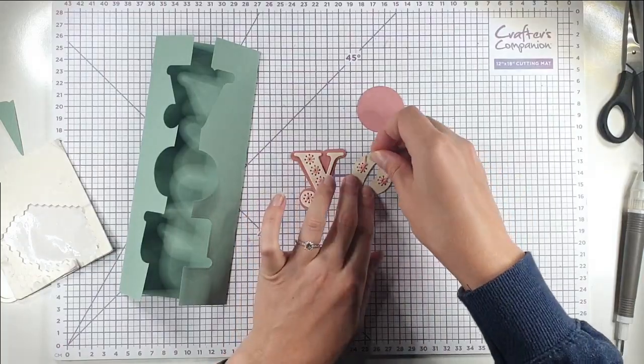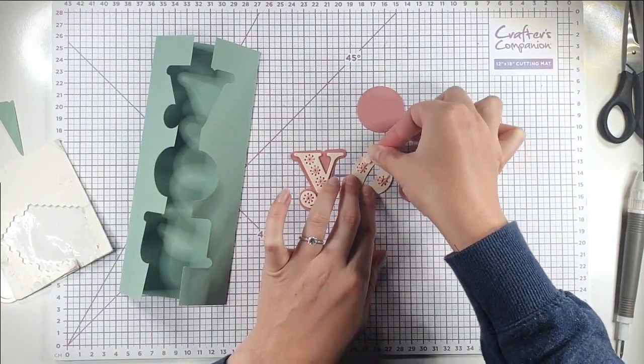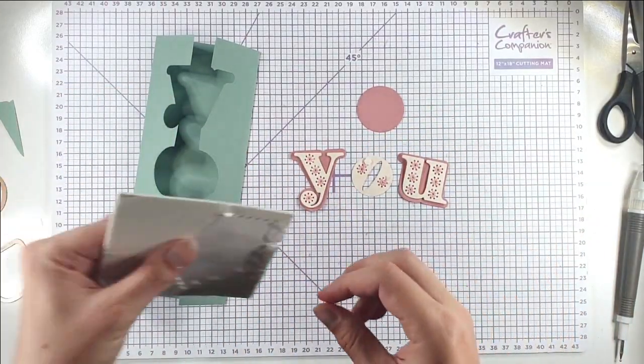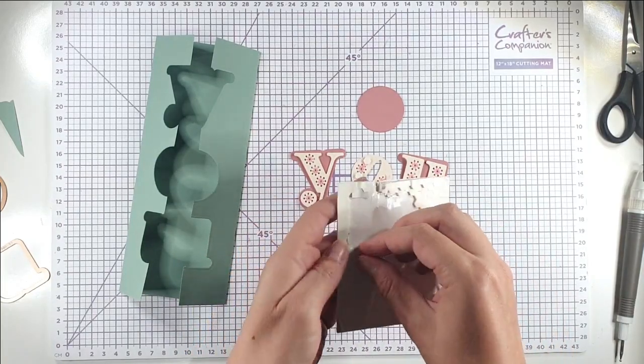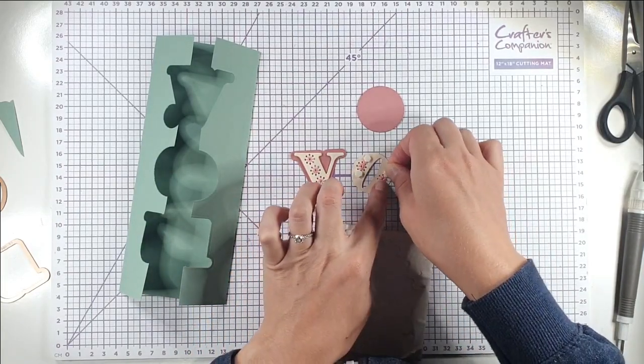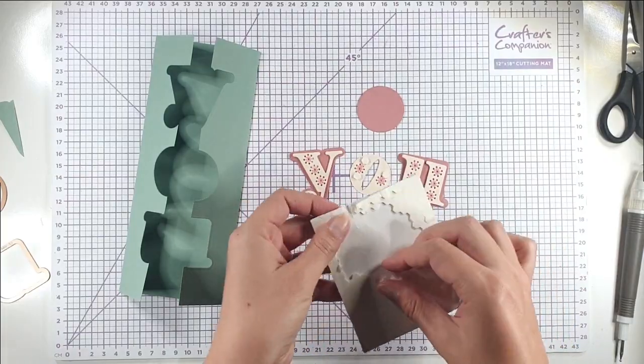So then I'm just going to add the letters onto the letter backs with some foam pads. I'm trying to trap some of those ends under the foam pads as well just to give it a bit of extra security.